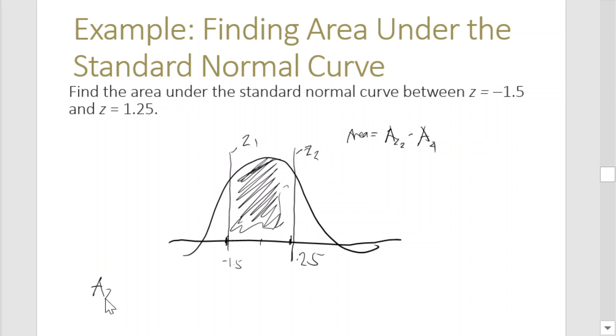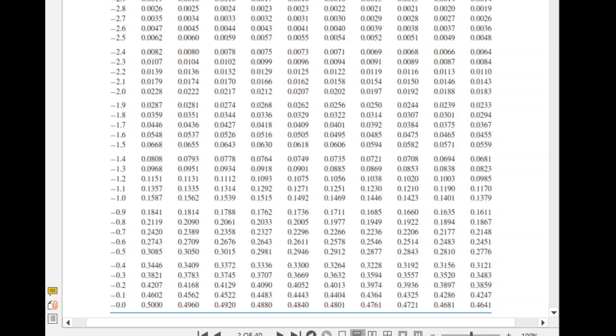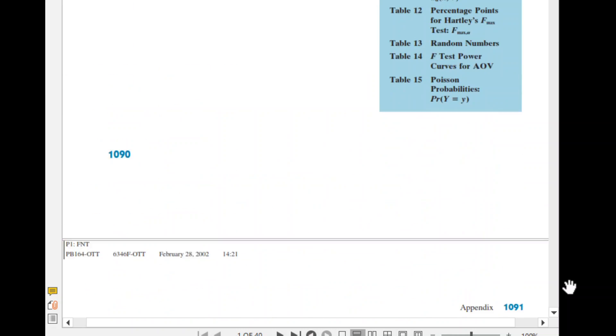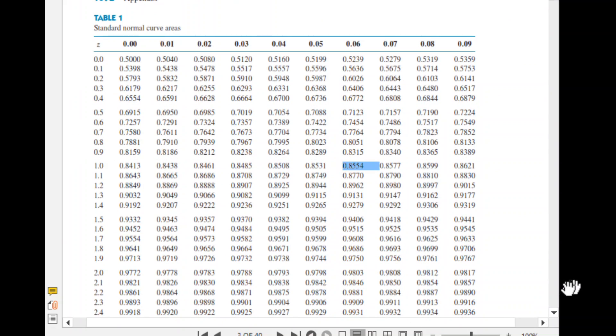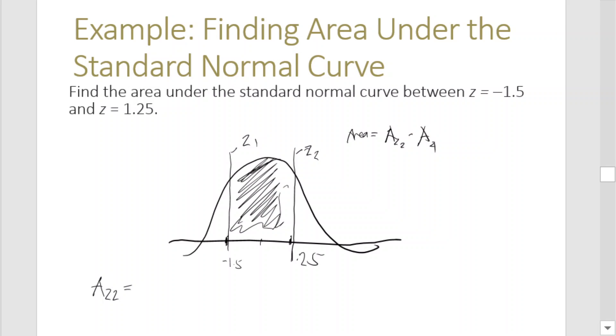The area of z2: let's check the table. The z2 value is 1.25. Looking at positive 1.2, then the second decimal 5, we get 0.8944. So we write that in our chart: 0.8944.